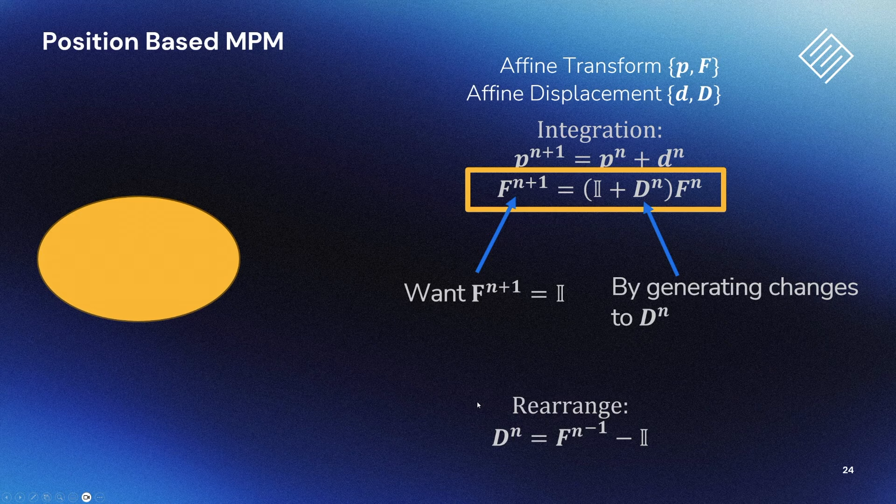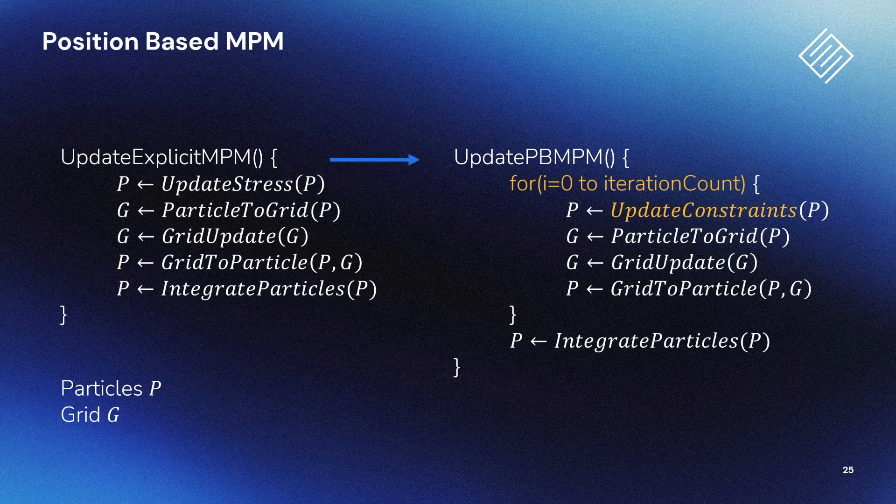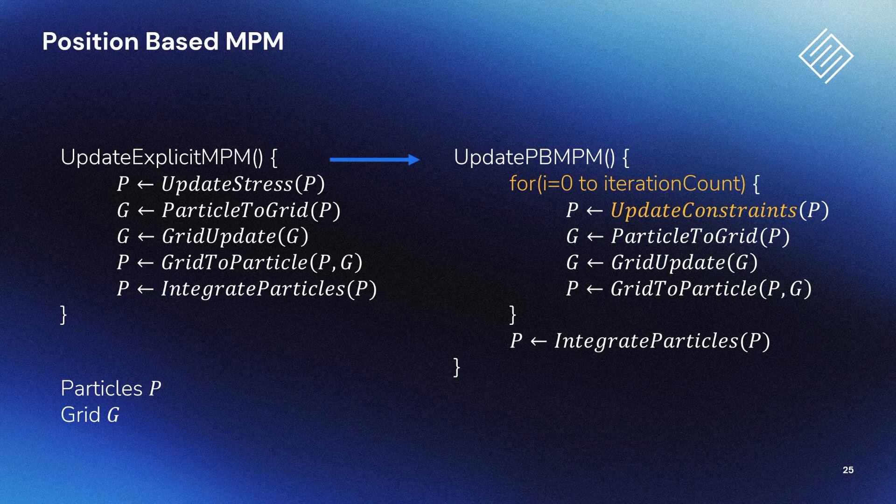This is the only change we need to make to an implementation of explicit MPM to turn it into PBD. It's just a few lines of code. You can see the difference between the implementations is small. We've run the constraint solving and grid transfer operations in a loop, and this allows to continuously refine a deformation displacement for each particle.